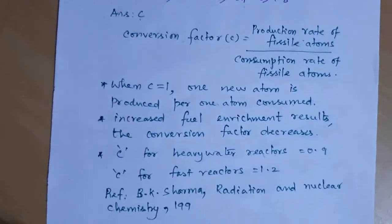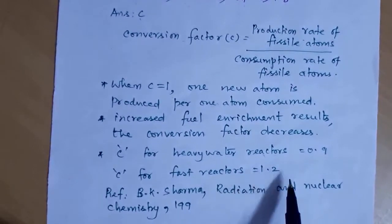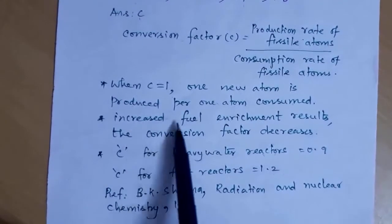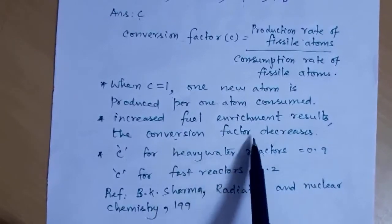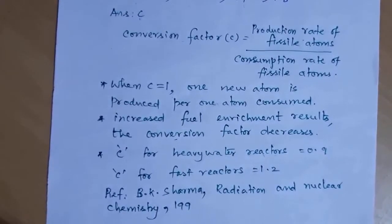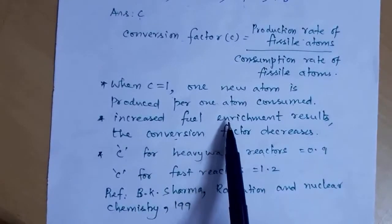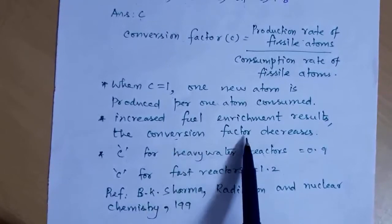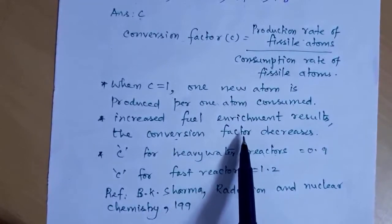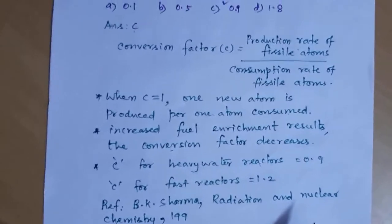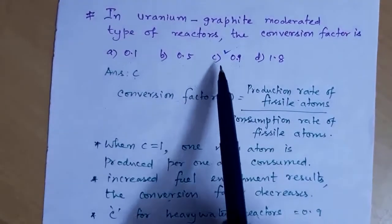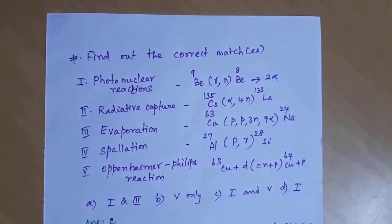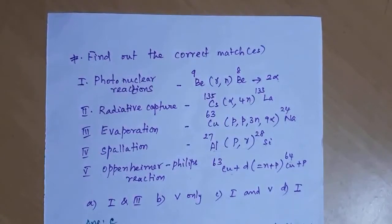The conversion factor C for a fast reactor is 1.2. In addition, increased fuel enrichment results in a decrease in the conversion factor — concentration and conversion factor are inversely proportional. So the answer is option C. Next question: find out the correct matches for various nuclear reactions.